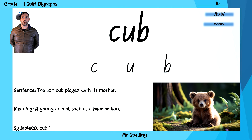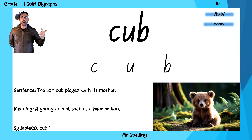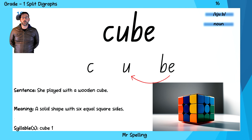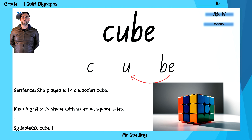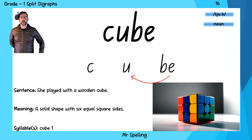Cub is the next word on our list. The mama bear had a baby cub. Cub. And the sounds of cub are C, U, B — cub. Now if you put a silent E on the end of the word, you now have the word cube. The dice was shaped like a cube. Cube. And the sounds of cube are C, U, B — cube.